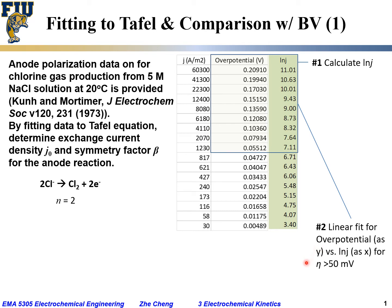And of course, for Tafel, in this case, we are only using overpotential value greater than 50 mV. I will explain a little bit more. But keep in mind, Tafel's relationship quite often is for overpotential is significant, for example, greater than 100 mV. But here, for this example, we are fitting using data greater than 50 mV, so from this row and above.